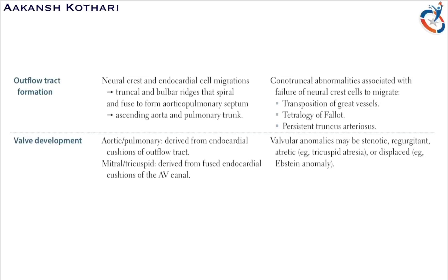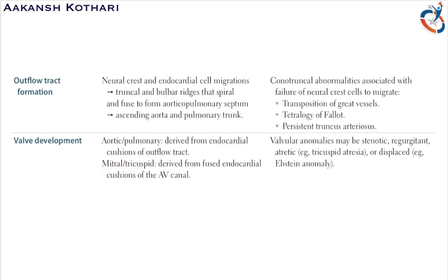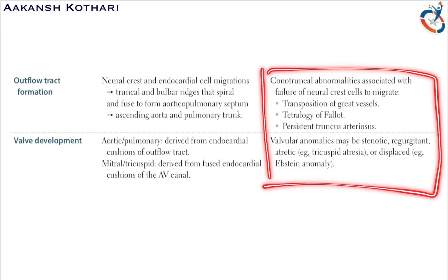Let's talk about valve development. The aortic and pulmonary valves are derived from the endocardial cushion of the outflow tract. The neural crest cells and endocardial cells form the ascending aorta and pulmonary trunk. The mitral and tricuspid valves are formed from the AV canal and the fused endocardial cushion. Valvular anomalies may be stenotic, regurgitant, or atretic — such as mitral stenosis, mitral regurgitation, tricuspid atresia, or displaced valves. If the valves are displaced, it is called Ebstein's anomaly. All of these will be covered in the pathology module.